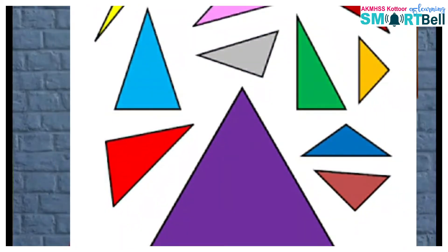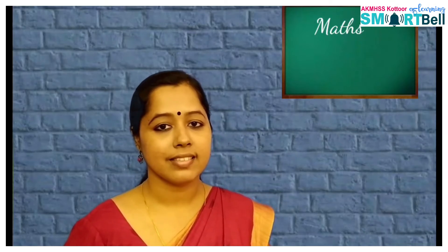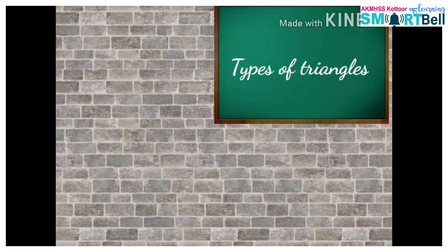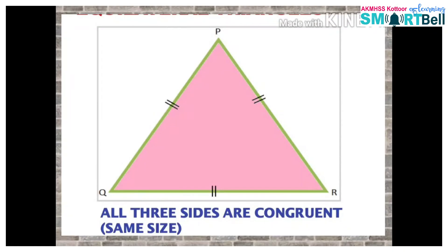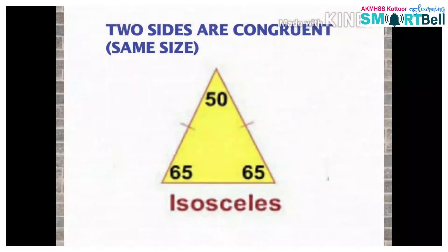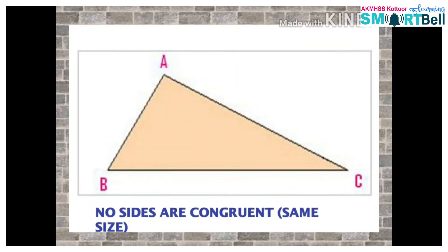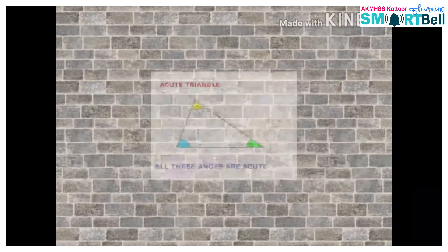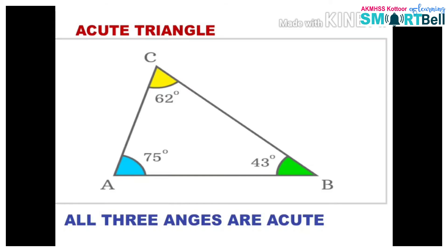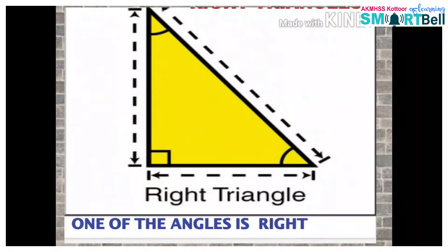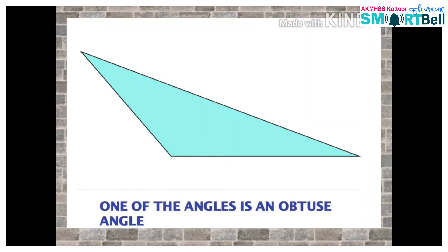A triangle is a three-sided closed figure. There are types of triangles based on the length of sides and measure of angles. Based on the sides, we have three types: equilateral triangle, isosceles triangle, and scalene triangle. Based on the angles, we have acute triangle, right triangle, and obtuse triangle.